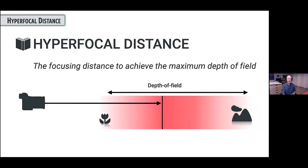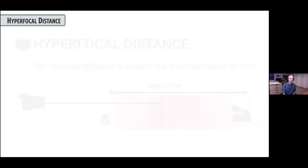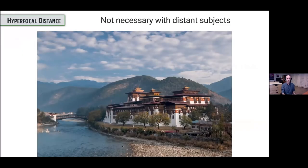Somewhere in between the near and the far is your hyperfocal distance — this little magical mystery point where, if you set your lens to that particular point and set a particular aperture, you will get everything from the foreground to the background into an acceptably sharp photograph. And the key is: how do we do that?